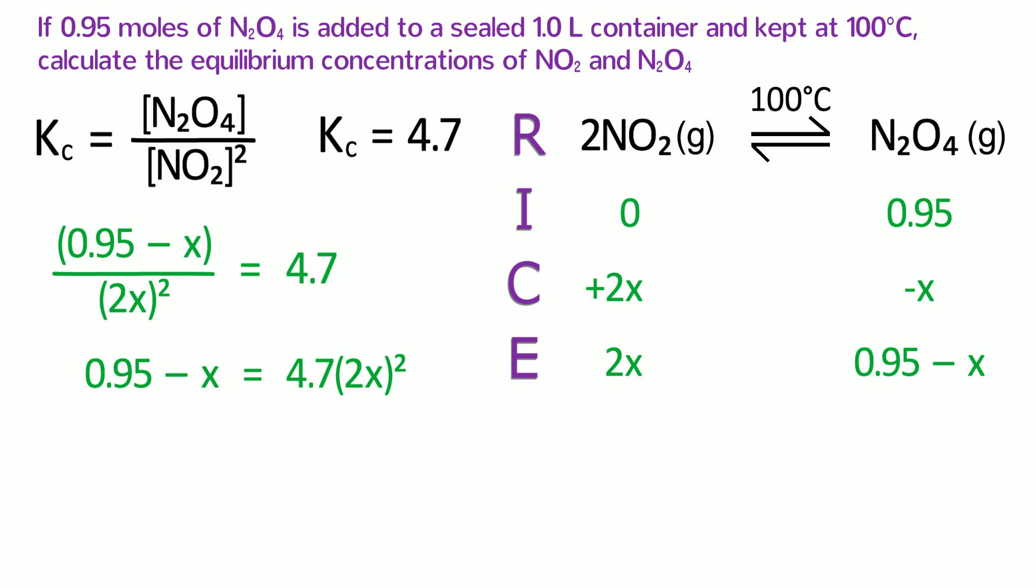By now, we can see that this is a quadratic equation, so let's put it in a form that enables us to plug it into the quadratic formula. Subtract 0.95 and add X to both sides of the equation. This gets us 0 equals 18.8X squared plus X minus 0.95. The 18.8 comes from 4.7 times 2 squared.